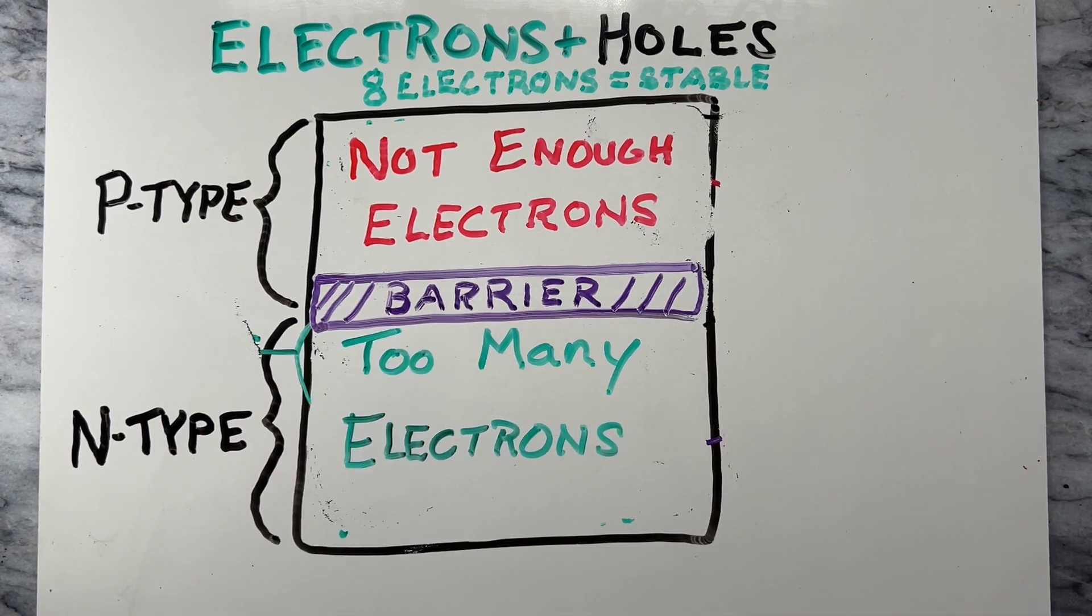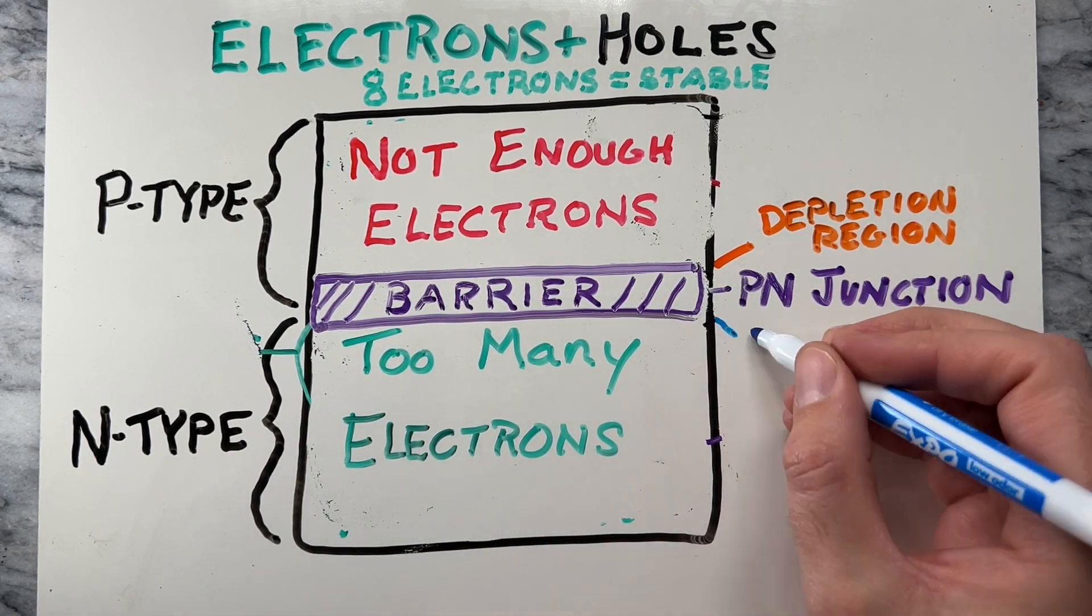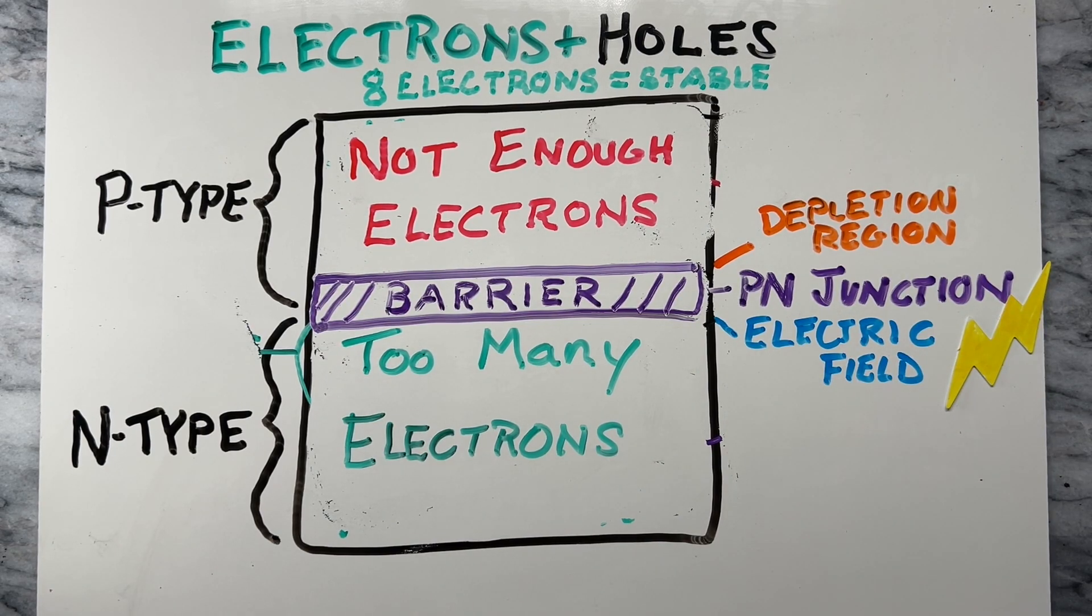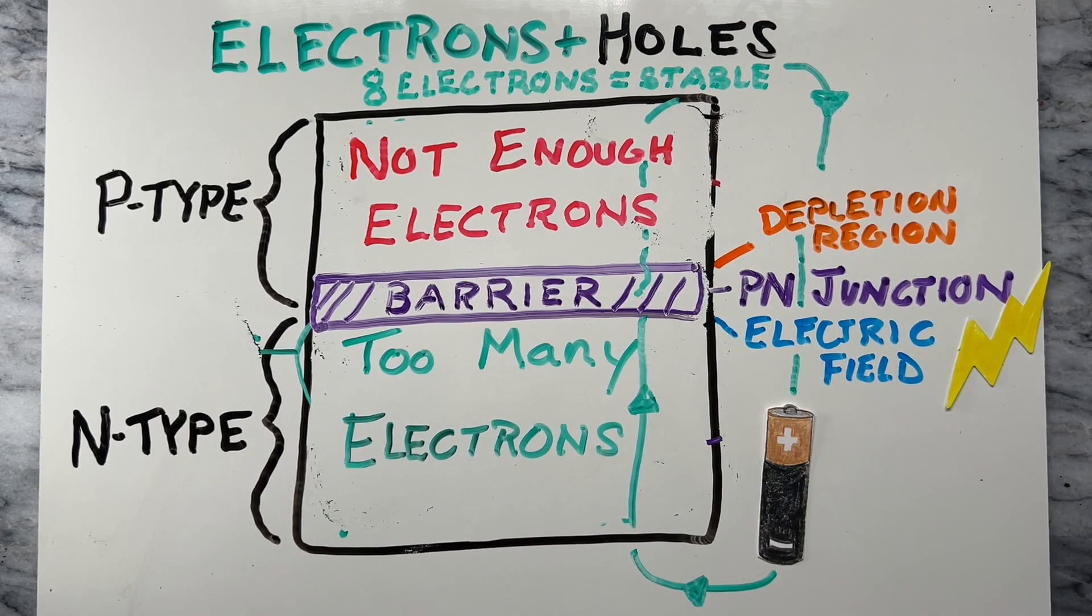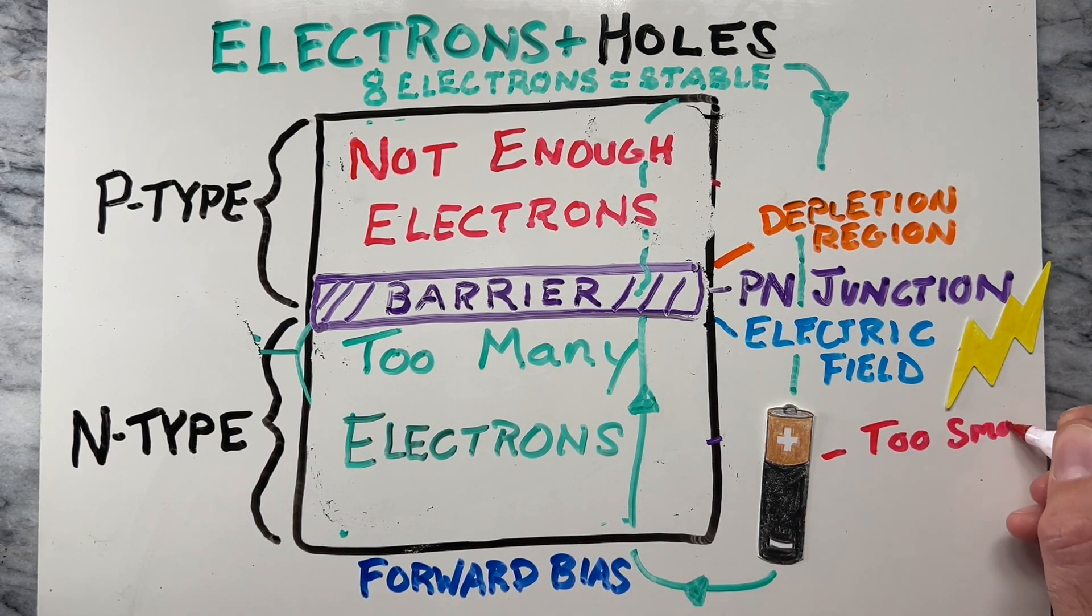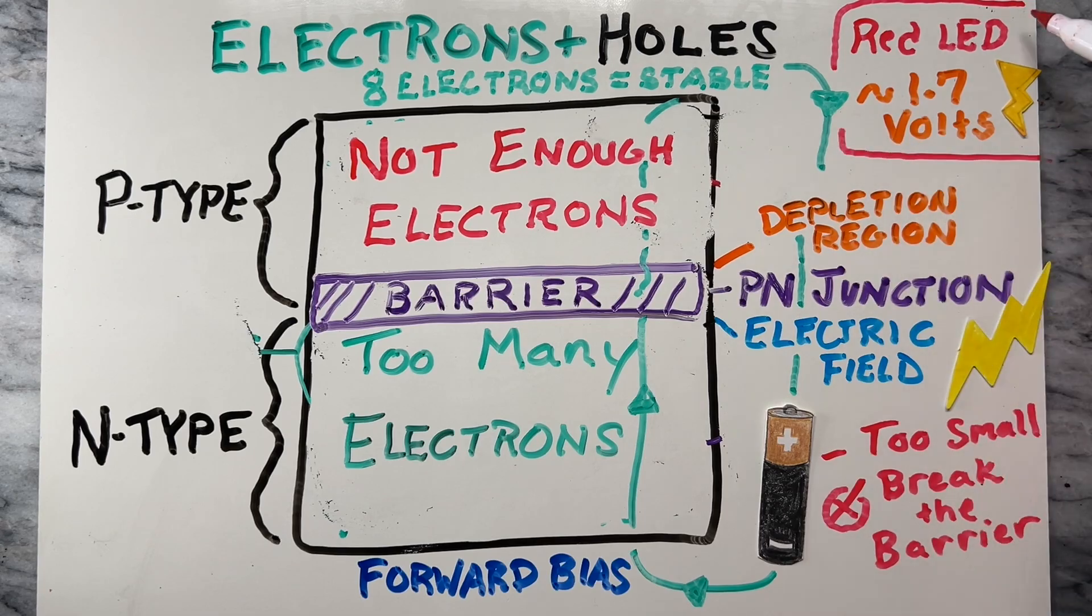This P-N junction creates a depletion region that creates a barrier and an electric field. When we connect a battery, the electrons flow through the barrier, creating what is called a forward bias. If there's not enough voltage, then the electrons are not able to break through the barrier. For a small red LED, it may take around 1.7 volts to break through the barrier.